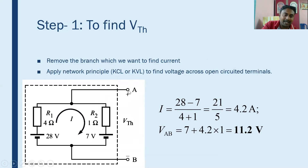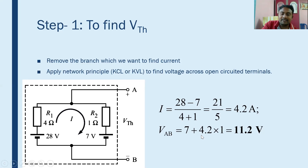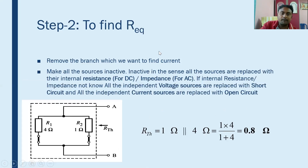The voltage across AB is found by tracing the path from A to B. In R2 the current flowing is 4.2 amperes, and there is a voltage of 7 volts. So VAB equals 7 volts plus the current times resistance: 4.2 amperes into 1 ohm. We get VAB as 11.2 volts.